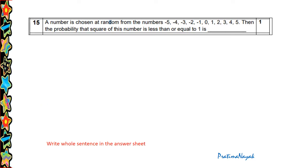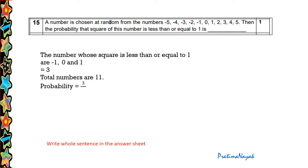A number is chosen at random from the numbers minus 5, minus 4, minus 3, minus 2, minus 1, 0, 1, 2, 3, 4, 5. Then the probability that the square of this number is less than or equal to 1 is blank. So here you should observe very carefully and we must have knowledge that square will be always positive. So here the numbers whose square is 1 or less than 1 are only 3 numbers: minus 1, 0, and 1. So it is 3. And what is the total number? Total number is 11. So probability of square of this number less than or equal to 1 is 3 upon 11.